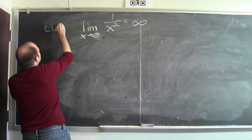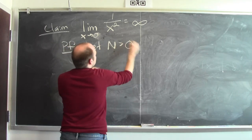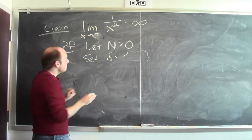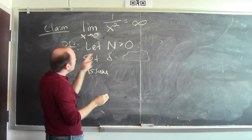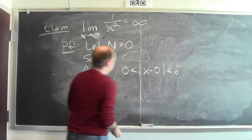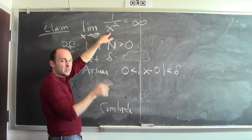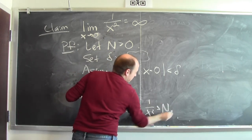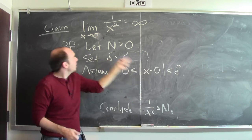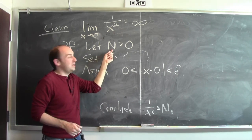Let's see if we can justify this claim. We're going to start out: let N be bigger than 0 — this is how big you want 1/x² to be. I'm going to respond by setting delta equal to something I don't quite know yet. I get to assume that x really is within delta of 0, so I'll assume 0 < |x − 0| < delta. And I'm going to conclude that 1/x² is bigger than N — this is what you want: to make the function as big as you demand, as long as x is sufficiently close to 0.